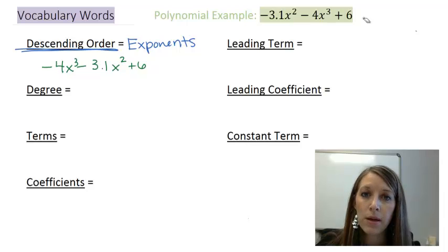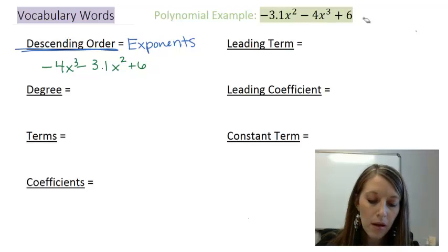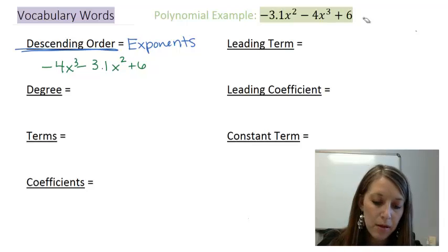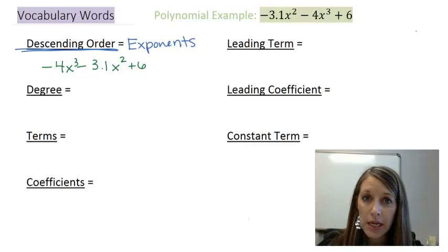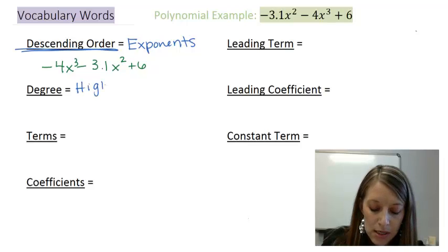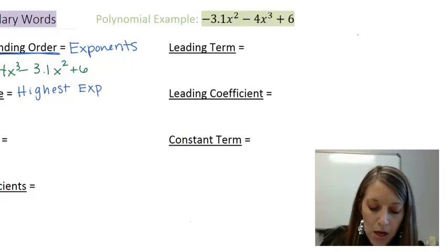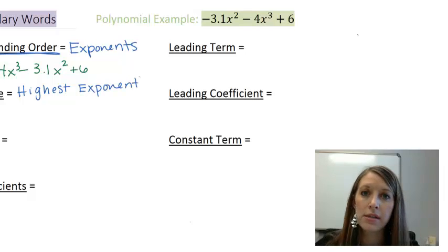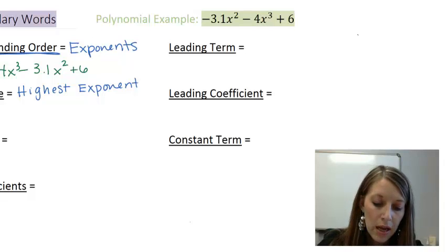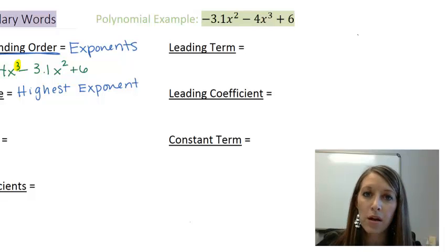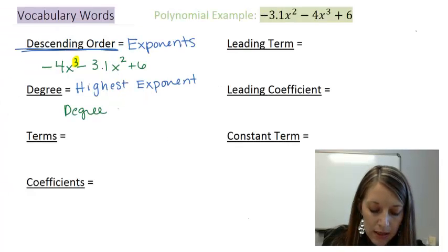I've taken this polynomial example and written it in descending order — by the exponents, with the largest exponent first and the least exponent at the end. Now, our first official vocabulary word is degree. Every polynomial will have a degree associated with it. A degree is the highest exponent associated with that polynomial. Since we've rewritten it in descending order, our highest exponent is the first one, which is 3. So our polynomial is degree 3.